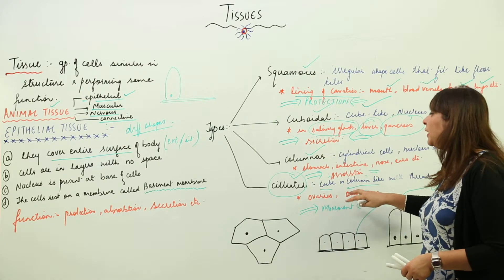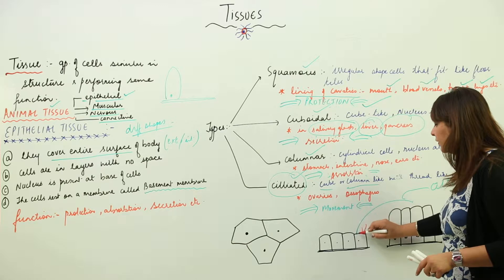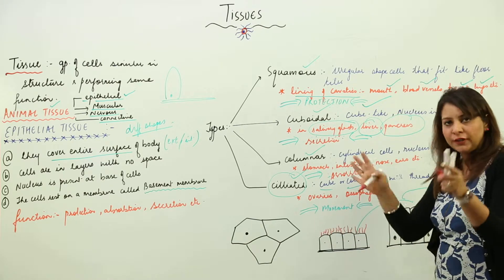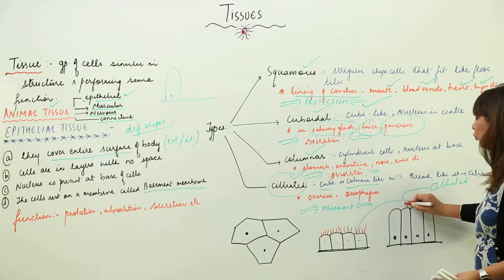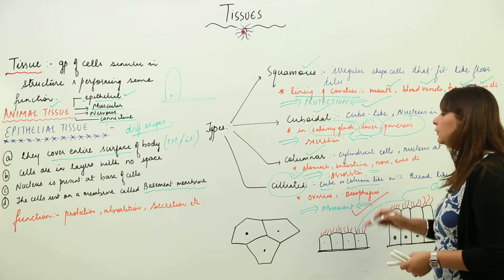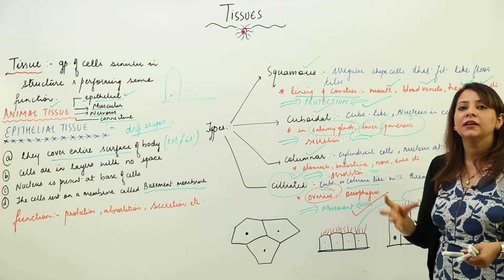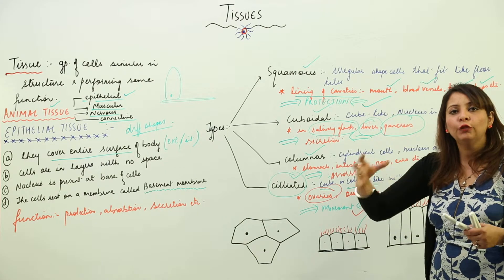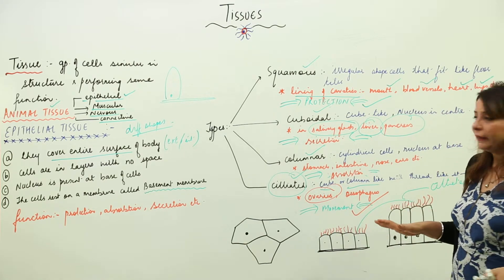Ciliated epithelium can be column or cube-like in shape. Apart from that, it contains thread-like or hair-like structures called cilia, which can cause rhythmic movement. Due to that movement, they help in propelling any substance. Ciliated epithelium is present in the ovaries as well, where it helps the ovum move further along.